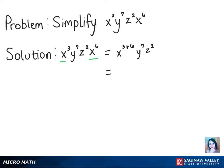And then after we add those exponents, it's as simple as that. We get x to the 9th power times y to the 7th power times z squared, and that is our solution.